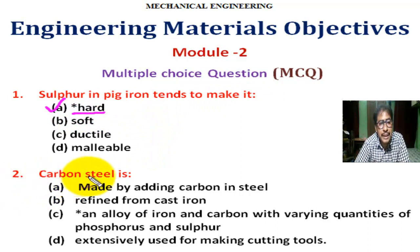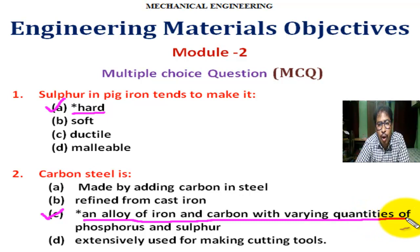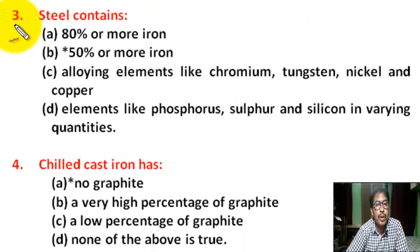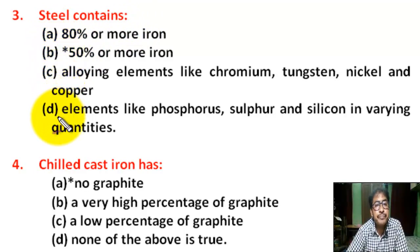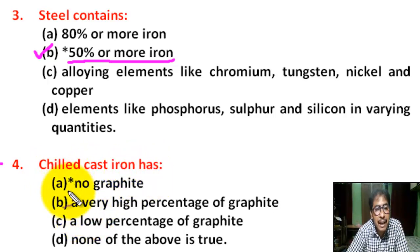Question number two: carbon steel — correct answer is C — carbon steel is an alloy of iron and carbon with varying quantities of phosphorus and sulfur. Question number three: steel contains — correct answer is B — steel contains 50% or more iron.